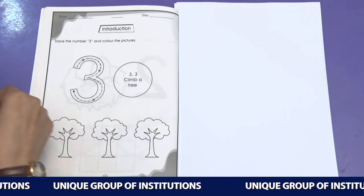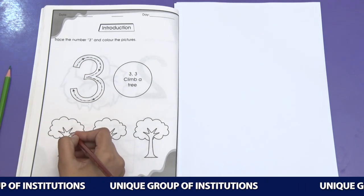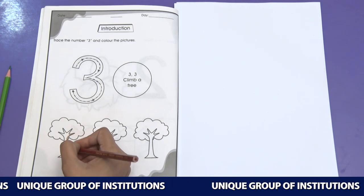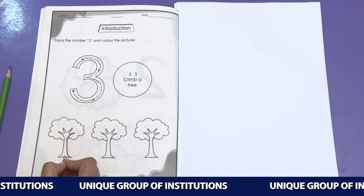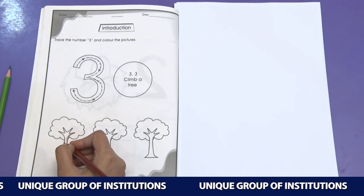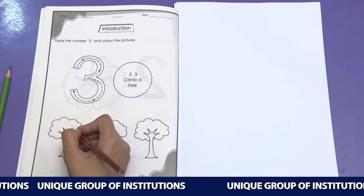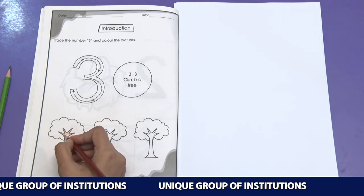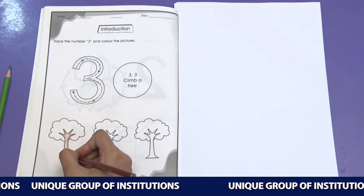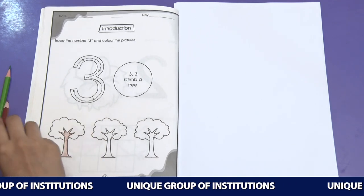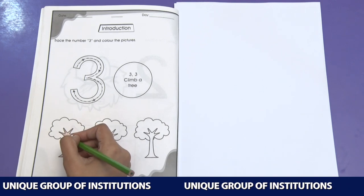Now let's color them. 1, 2. Keep doing your work. Now we are going to fill it. Now we are going to color the branches.